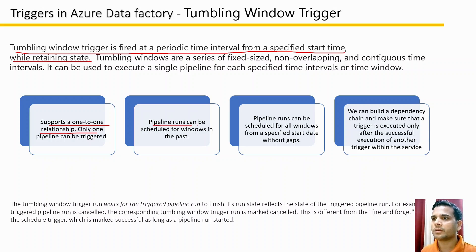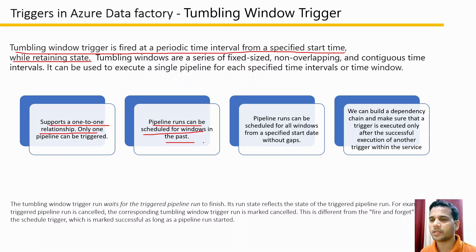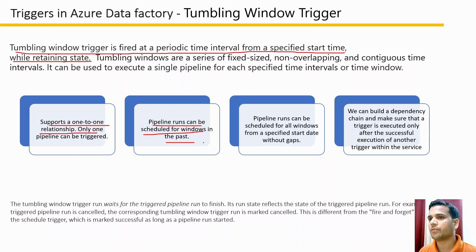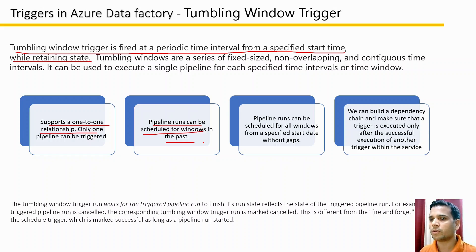The second feature is that pipeline runs can be scheduled for a window in the past. For example, let's say there is an IoT device sending data every hour and we want to process that data using pipelines, including data from past dates. With tumbling window triggers, we can set up parameters to define the data processing window for past dates as well.